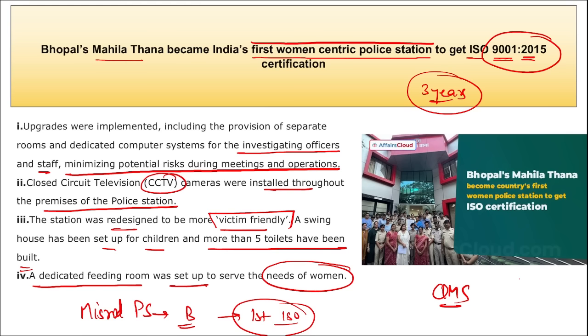If asked about ISO — International Organization for Standardization — its headquarters is in Geneva, Switzerland, and it was established in 1947.